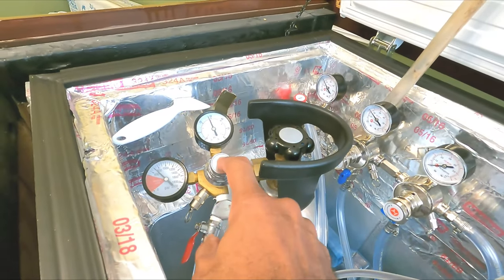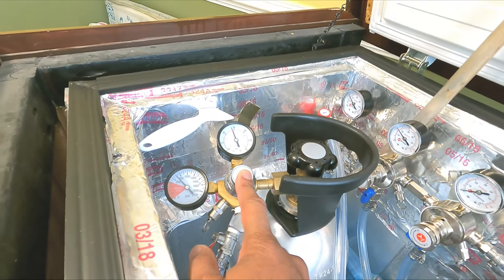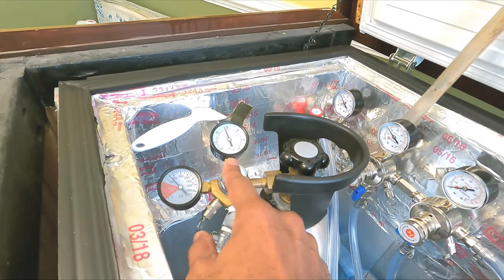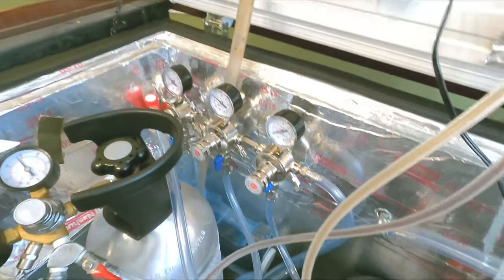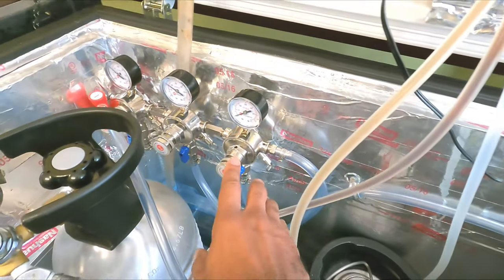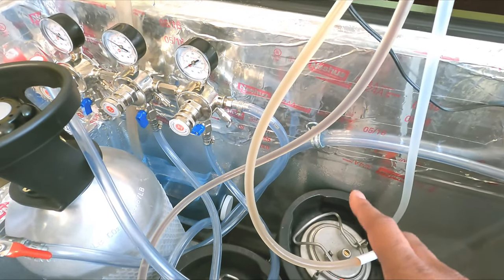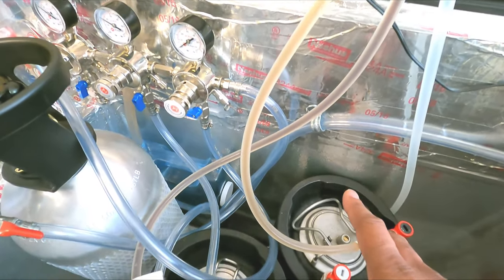This is the control that just controls the main pressure, which I normally keep around 25 PSI, a little over 25 PSI. Because when I force carbonate, I force carbonate at 25. I crank the beer up to 25 and let it sit under pressure at 25 until it gets to the carbonation level that I like. And then I dial it back to the serving pressure.